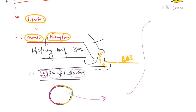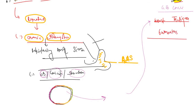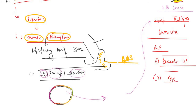Gallbladder carcinoma is one of the worst malignancies — the average survival rate is less than six months. The risk factors for gallbladder cancer are two: porcelain gallbladder, as already mentioned, and age. Age and porcelain gallbladder are the two risk factors for gallbladder carcinoma.